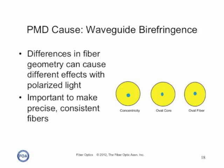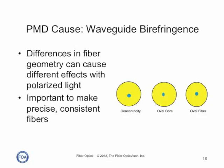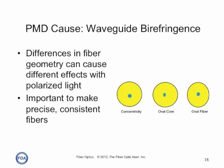One cause of polarization mode dispersion is waveguide birefringence, caused by variations in the geometry of the optical fiber, including core-cladding concentricity, core ovality, or fiber ovality. Fiber may suffer variations in geometry over its length, and concatenated fibers may have different characteristics. So the results of factory testing of PMD may not be easily correlated to the PMD of an installed cable plant. Only testing of the installed cable plant can provide that information, and it may only show the PMD for the actual time the cable is being tested.